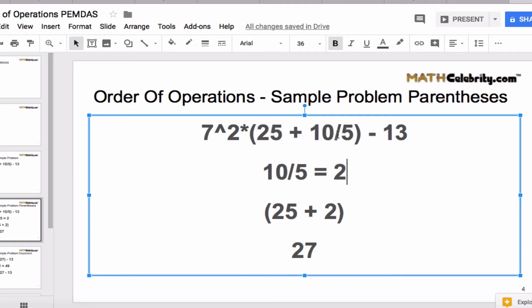First we're going to divide 10 by 5, and that's 2. Then the inside of the parentheses simplified becomes 25 plus 2, because we've simplified 10 over 5 to 2. Now we're going to simplify inside the parentheses; it's 27.